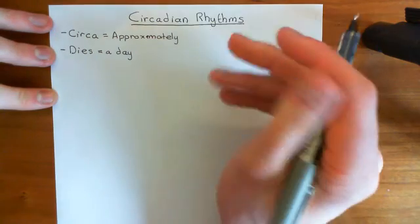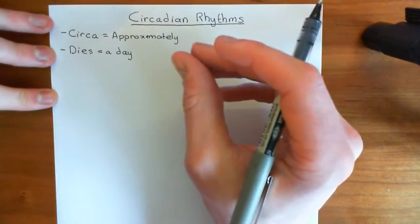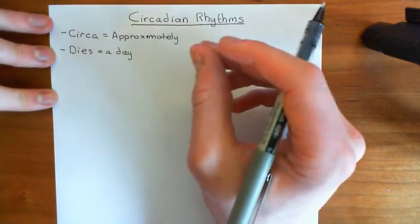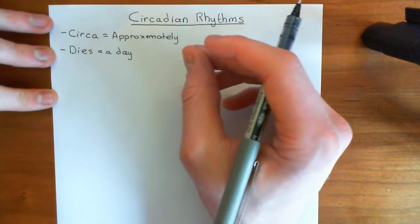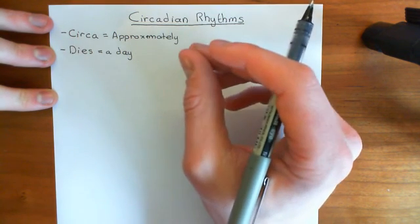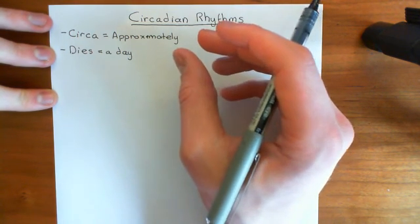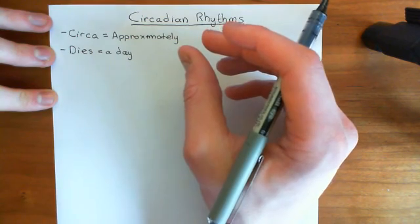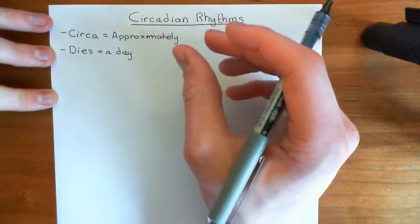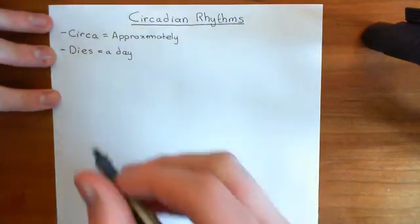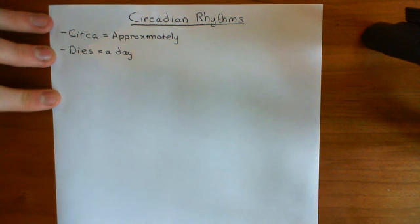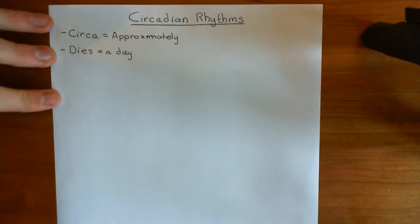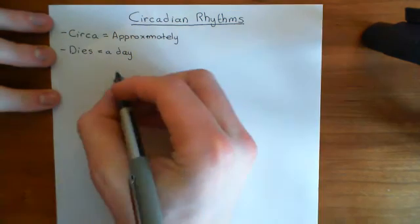Circadian rhythms are things which cycle round and round again, and the period for a cycle to occur is a day. The most obvious starting point for the discussion of a circadian rhythm is the light-dark cycle, because that's something that cycles on a 24-hour loop.